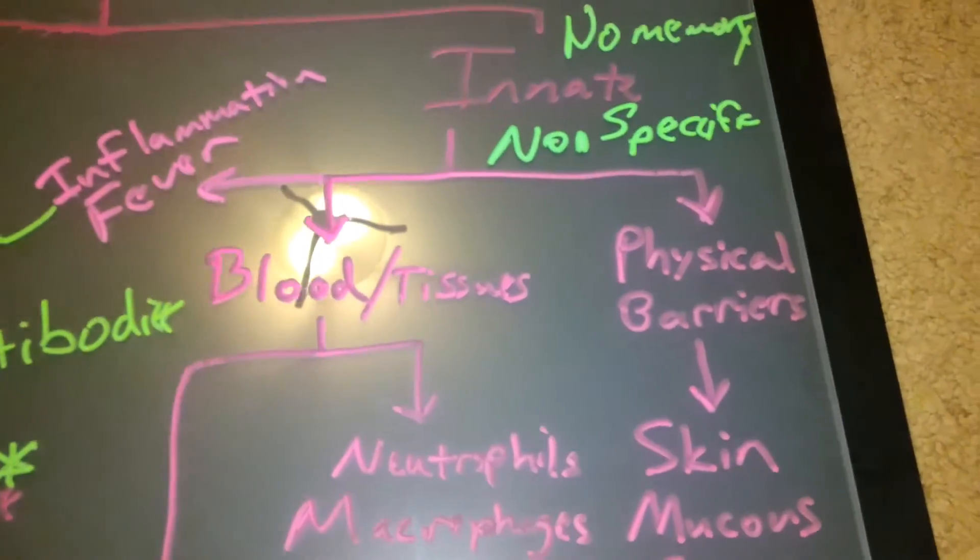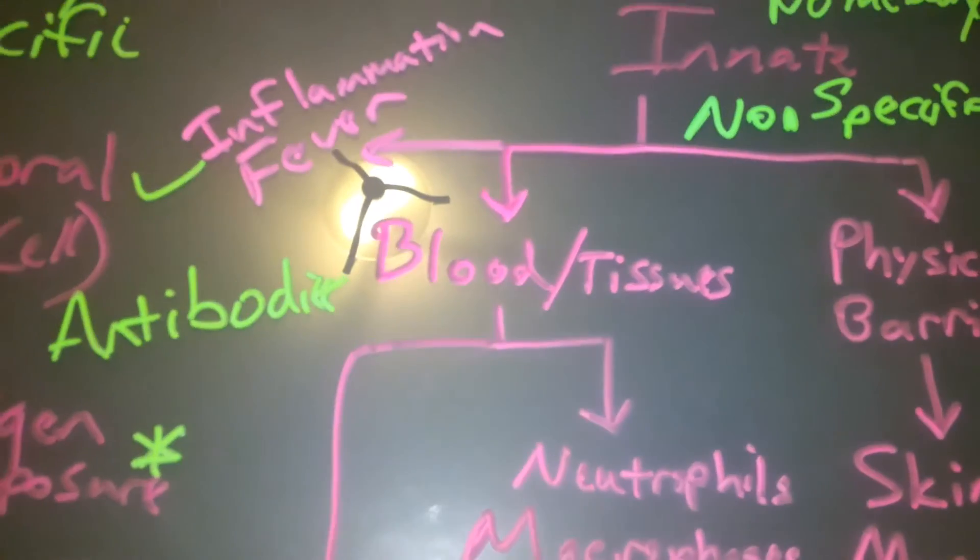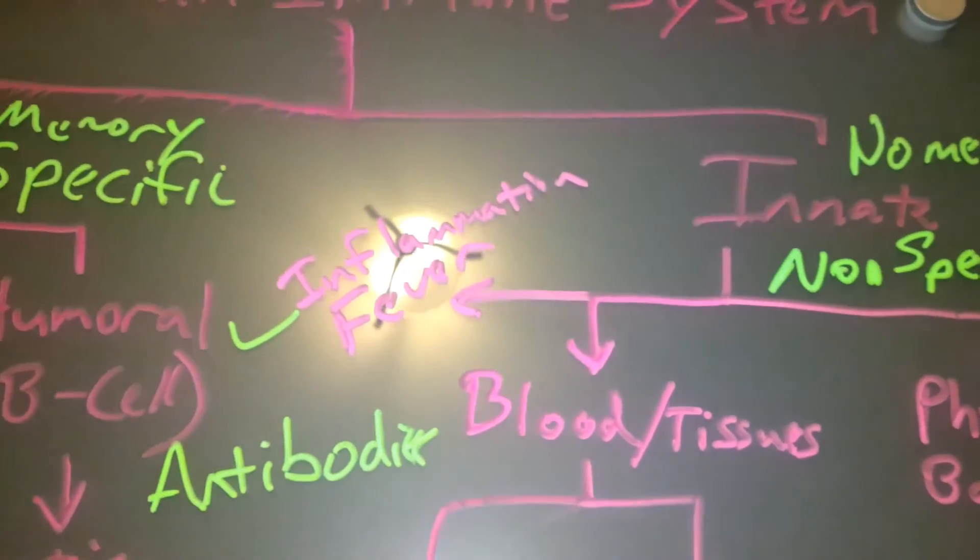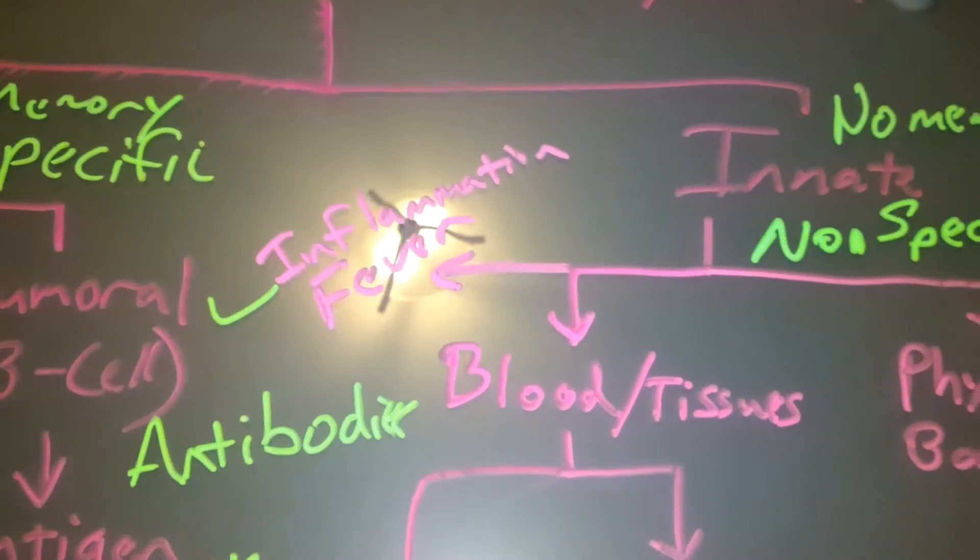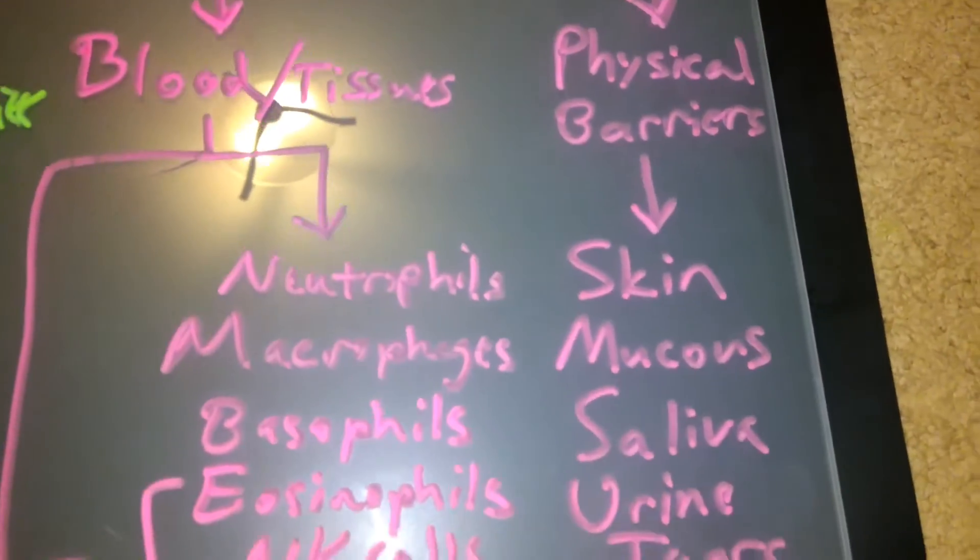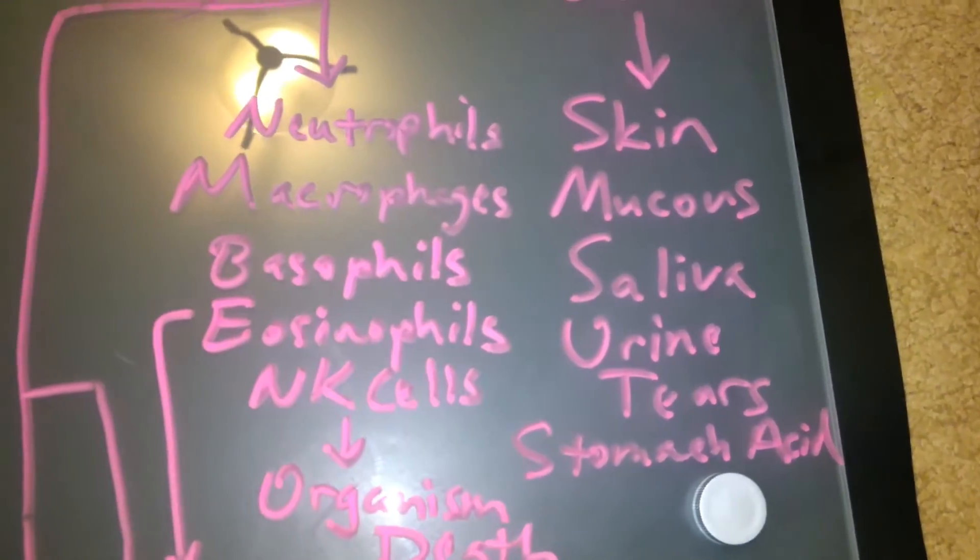Really, it wants to say we've got three different areas. We've got physical barriers. We have defenses that are specified for the blood and tissues. And then we have area defenses. So your physical barriers are things like skin, mucus, saliva, urine, tears, and stomach acid. I bet you you've heard numerous times someone drops some food on the table and they say, I'm going to eat it anyway, because my stomach acid is going to kill it all.